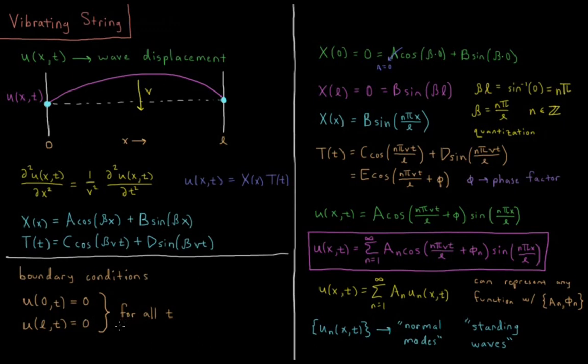So let's use these boundary conditions to try to solve what the restrictions are for the spatial part of our amplitude. We have x of zero is equal to zero. Because that's true at all times, that equals A cosine of beta times zero, so cosine of zero which is one, so this is A, plus B times sine beta zero. The sine of zero is zero, so this whole equation is just equal to A.